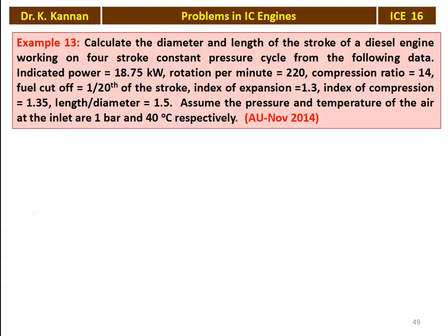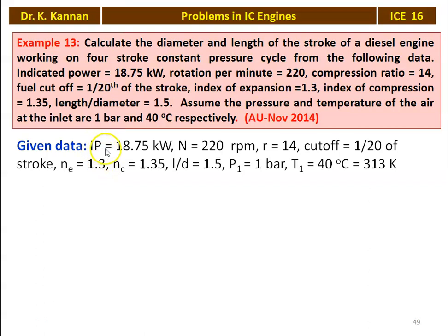Example number 13, from November 2014 question paper: calculate the diameter and stroke length of a diesel engine working on a four-stroke constant pressure cycle. Given: indicator power 18.75 kW, speed 220 RPM, compression ratio 14, fuel cutoff 1/20th of stroke, index of expansion 1.3, index of compression 1.35, stroke-to-diameter ratio 1.5, inlet pressure 1 bar and 40°C (313 K).